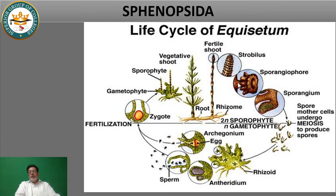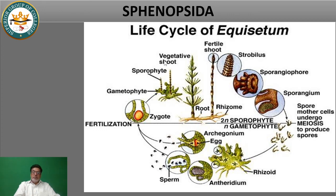Looking at this branch, this is the sporangia. Sporangia produce spores, which germinate to form the gametophyte. The gametophyte has archegonium and antheridium, which produce gametes. Fertilization occurs, forming a zygote, and then the embryo develops back into the sporophyte. This was our topic. Thank you.